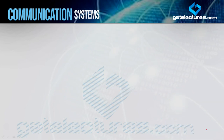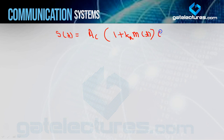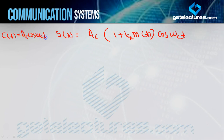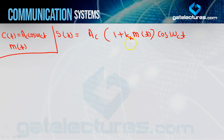What is amplitude modulation? The standard equation is: s(t) = AC [1 + kA m(t)] cos(ωC t). To create this amplitude modulated signal, the carrier signal used is AC cos(ωC t) and the message signal is m(t). Here, kA is called amplitude sensitivity and its unit is 1/volt.